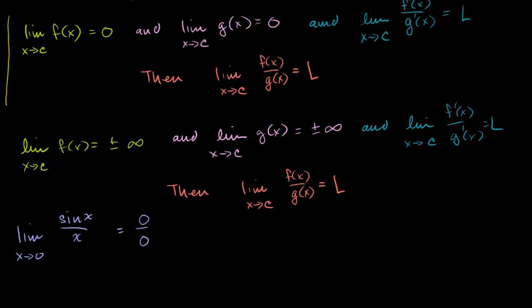If you want to think about it, our f(x) here is sine of x, and our g(x) for this first case is x. We definitely know this meets the first two constraints. The limit as x approaches 0 of sine of x is 0, and the limit as x approaches 0 of x is also equal to 0. So we get our indeterminate form. Let's see whether this limit even exists if we take the derivative of f(x) over the derivative of g(x) and take the limit as x approaches 0.